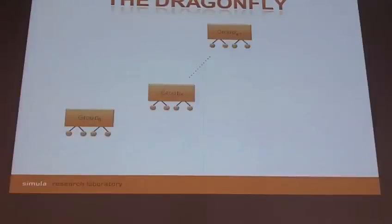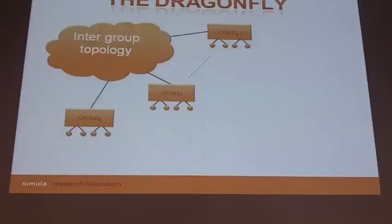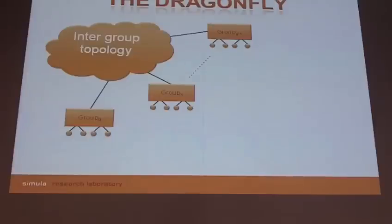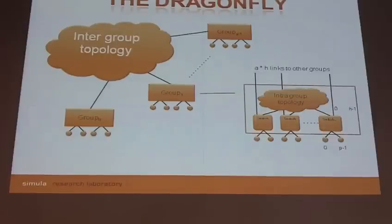Let's look at what the dragonfly can look like. Here we have three groups, each with four terminals, and these groups are interconnected in an all-to-all manner — each group has one link to each other group. Each group consists of its own topology and a set of switches and terminals. This can basically be whatever you choose, but based on the original study they suggested a flattened butterfly as a cost-effective alternative for the intra-group topology.